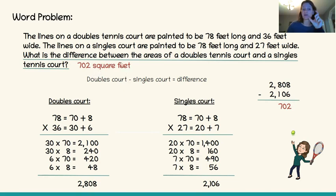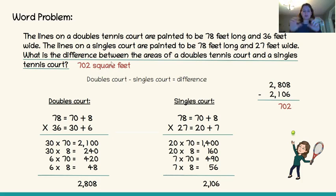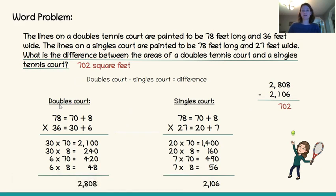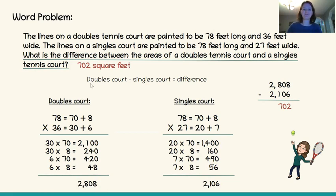I add 'square feet' because we are told the unit of measurement is feet, and 'square' because this is an area problem — we are filling in all the unit blocks of feet in our tennis courts. So 702 square feet. I actually had to do three different equations: multiply the numbers for the doubles court, multiply the numbers for the singles court, and then subtract singles from doubles. You could use expanded notation, place value sections, or the shortcut method.